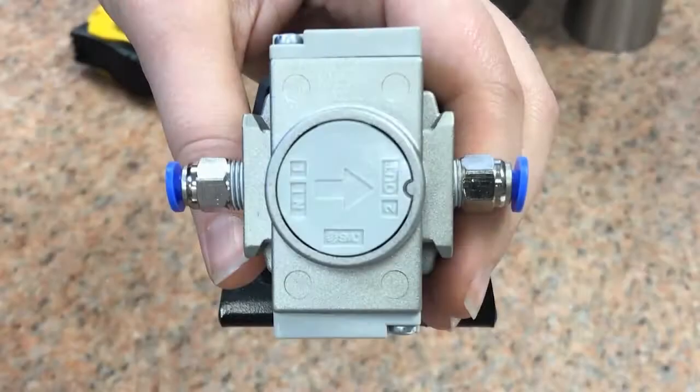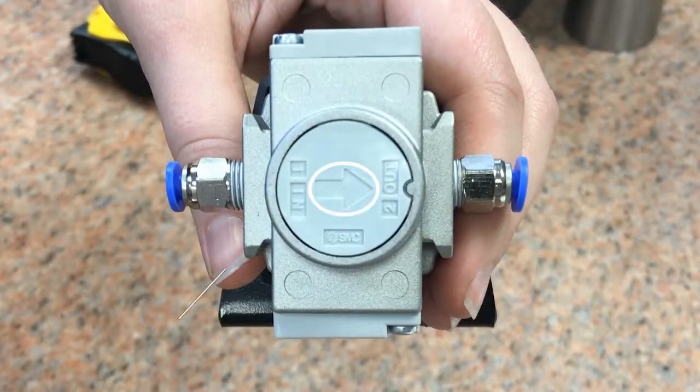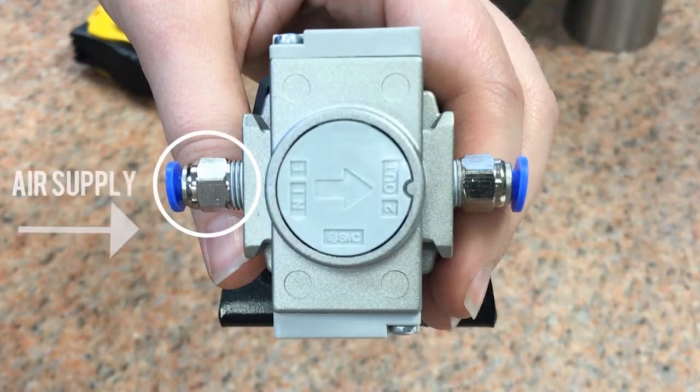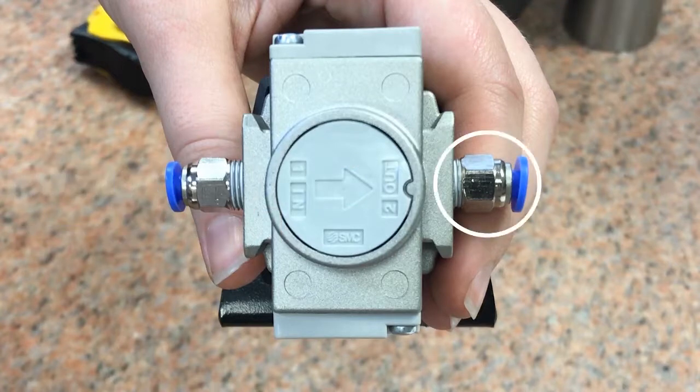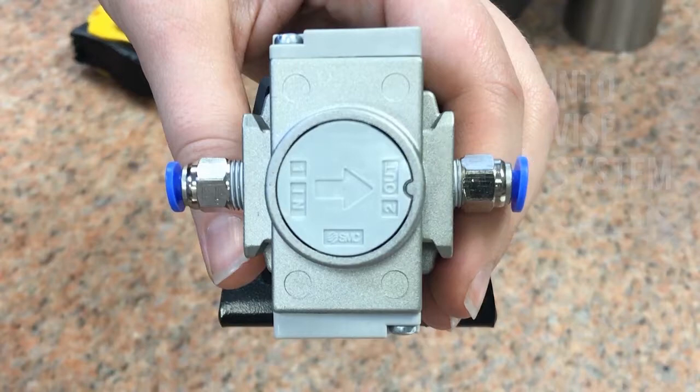Look on the bottom of the regulator. You will see there is an arrow within. This shows the direction of the airflow. The air should be flowing in from your air supply through the quick connect, through the regulator and into the 5-way valve on the vise.